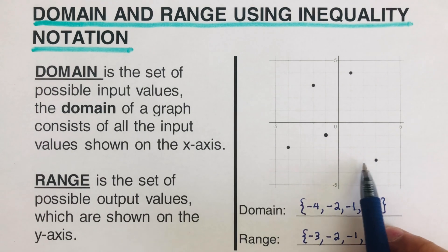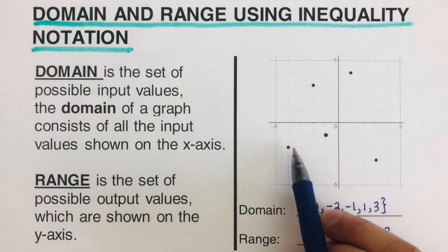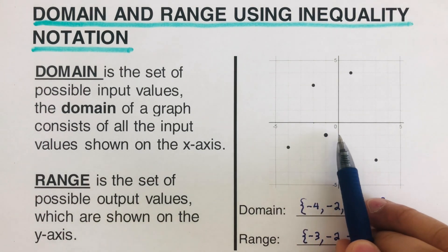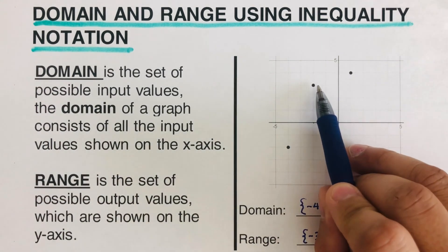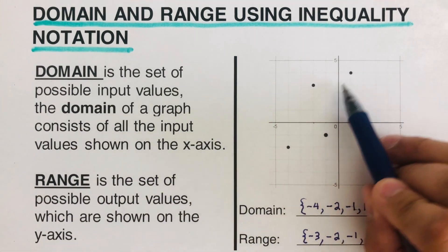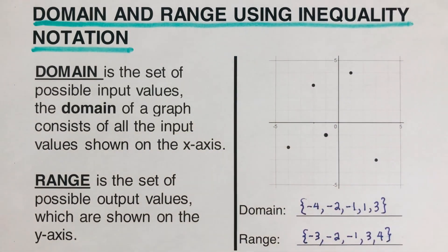So these are the values on the y-axis. So we have negative three, negative two, negative one, three, and four. So these are the domain and range for this graph right here.